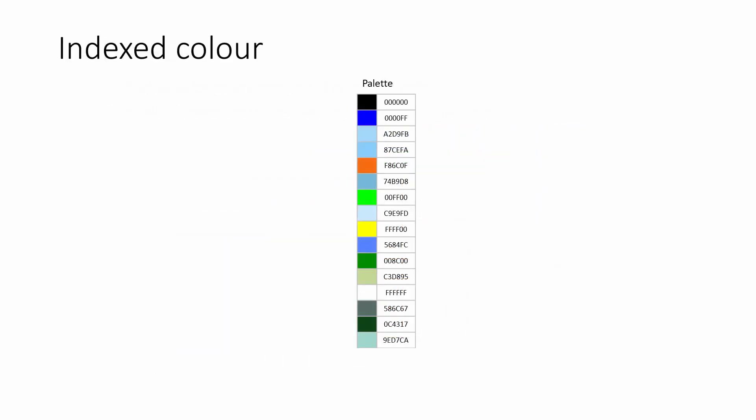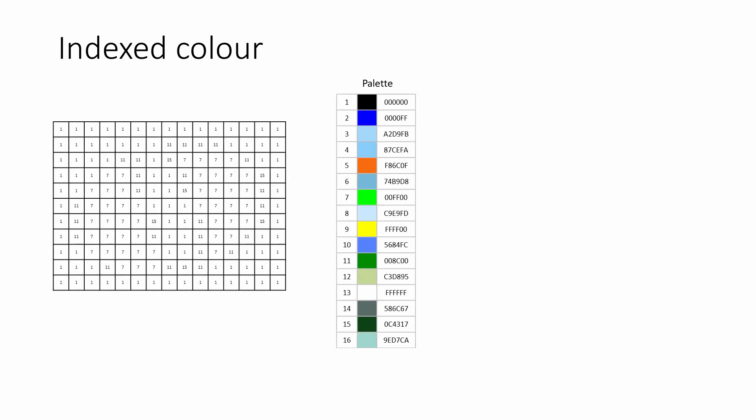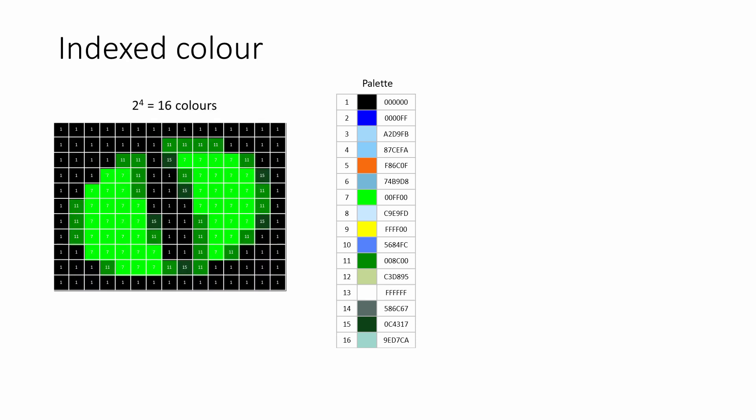But a bitmap can also be saved — usually more efficiently — by using indexed colour instead of true colour. In this method, a colour table known as a palette is included in the image file. Each colour in the palette has an index number, and information about each pixel is simply a reference to one of the colours in this table. In this example, the palette has only 16 colours, which means that a maximum of only 4 bits is required to encode the colour of each pixel, instead of the 24 bits required for the equivalent true colour image. When an indexed colour image is saved, the palette does take up some space as well — it's part of the image file's metadata.